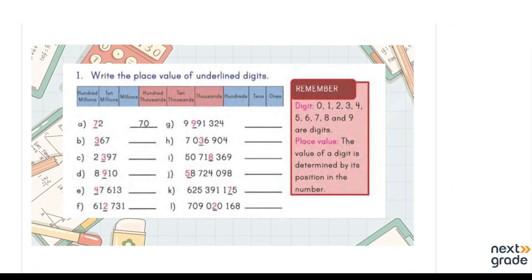Let's practice some more examples. We have to write the place value of the underlined digits. The first one is already done for us. Moving on: 1s, 10s, and then 100s — so we write 300. For the next number, reading from the right: 1s, 10s, 100s — same, we write 300. If the highlighted digit is in a 4-digit number, that gives us 900.